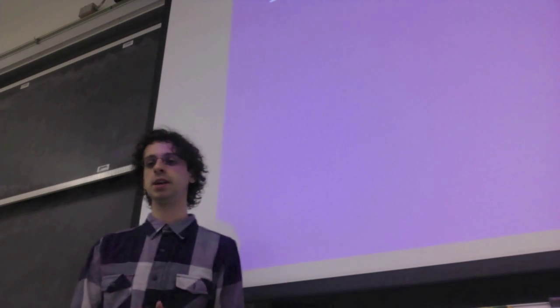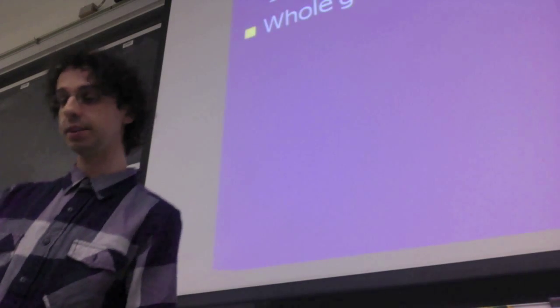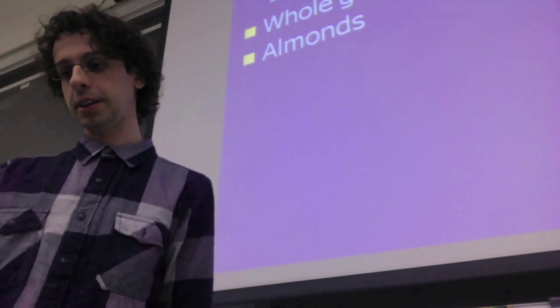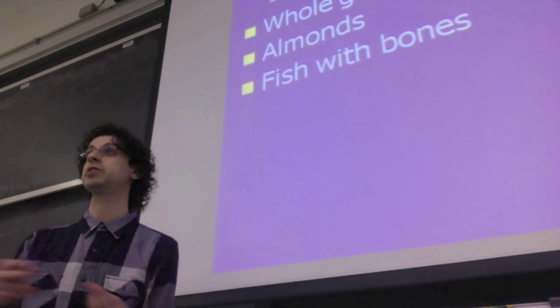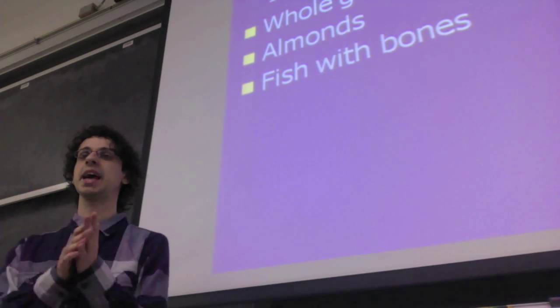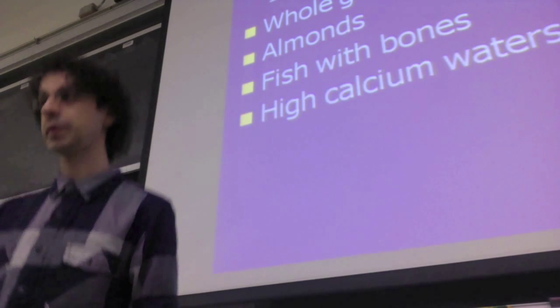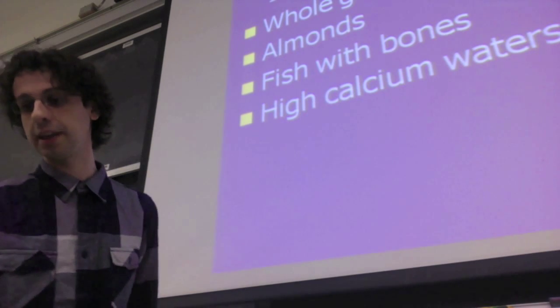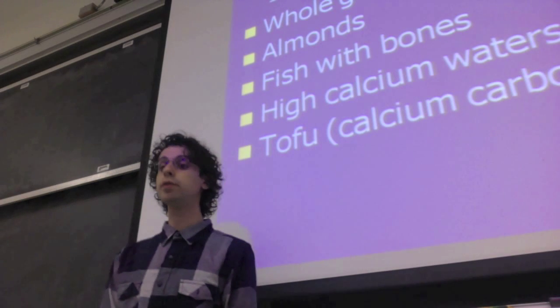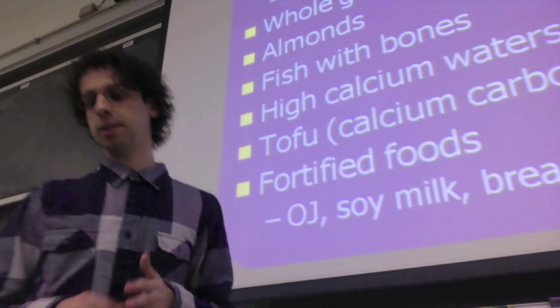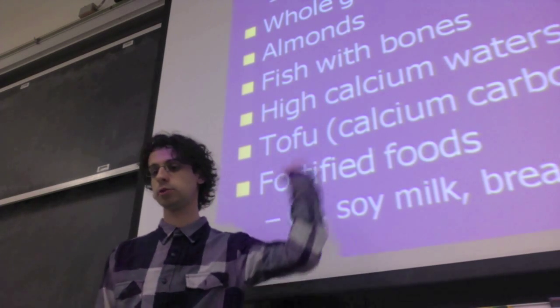Calcium food sources include yogurt, milk, and cheese. For vegans, there is plenty of calcium in green leafy vegetables and whole grains. Almonds and fish with bones — like sardines or canned salmon — are also good sources. Water that is rich in calcium can contribute to needs. Tofu made with calcium carbonate (the firm variety) is a good source. Many foods are fortified with calcium: orange juice, soy milk, and breakfast cereals. Remember to get enough but not more than needed.